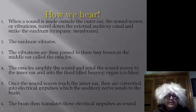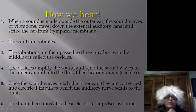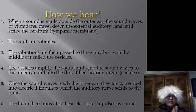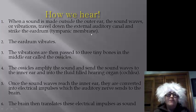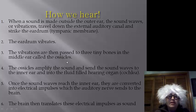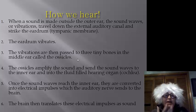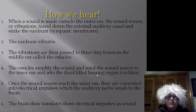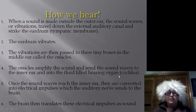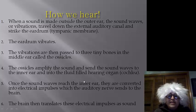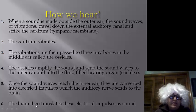How do we hear? The sound is made outside and travels to the outside of the ear. The sound waves or vibrations travel down the auditory canal and strike the eardrum, also known as the tympanic membrane. This tympanic membrane vibrates. The vibrations are passed through the three tiny bones of the ear, called the ossicles — the malleus, the incus, and the stapes. These ossicles amplify the sound, sending the sound waves to the inner ear into the fluid-filled hearing organ called the cochlea. Once the sound reaches the inner ear, it is converted into an electrical impulse that the auditory nerve sends to the brain, which then translates these impulses into sound.